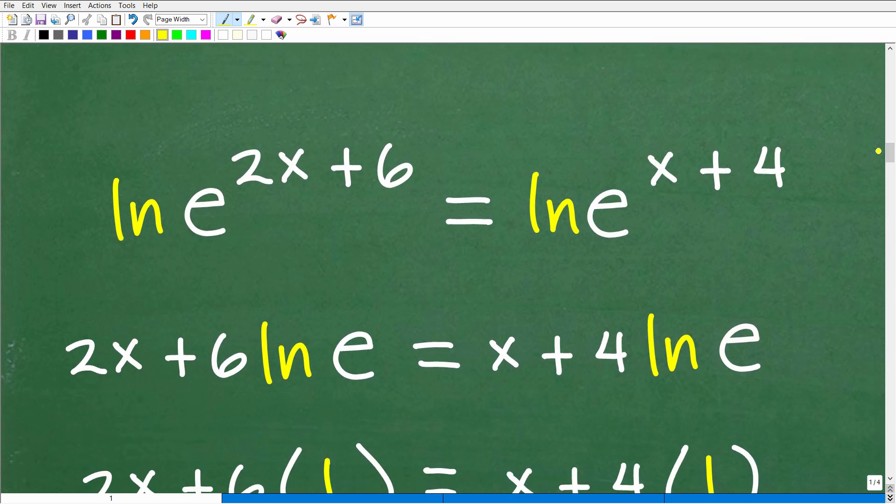Back to the problem. Okay, so again, we talked about we have an exponential equation. We need to use logarithms, and because we have base e, we're going to take the ln of both sides. Now, I just erased those ln's right there because I'm going to go ahead and just emphasize what we're going to do.